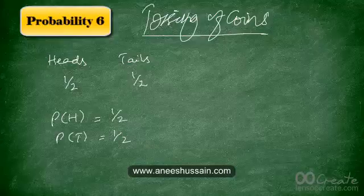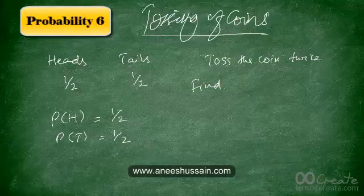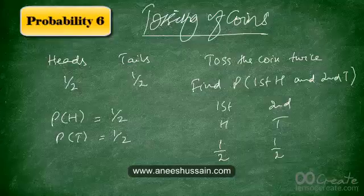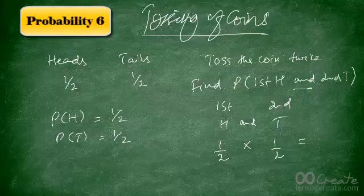The question says we want to toss a coin twice. Find the probability that we get a head first and a tail second. The probability the first is a head is 1/2, and the probability the second is a tail is also 1/2. This is an AND condition, so we multiply, and the answer is 1/4.